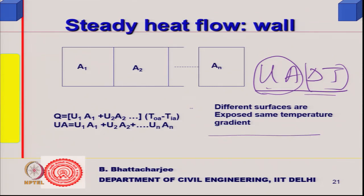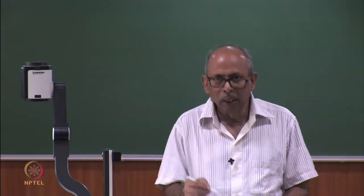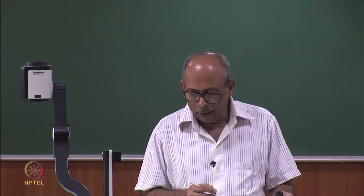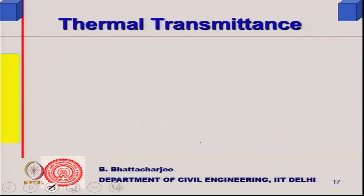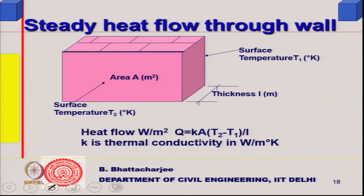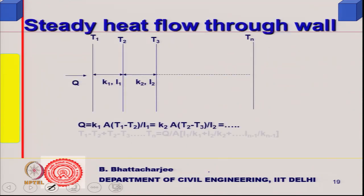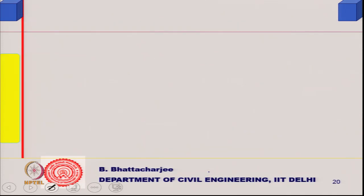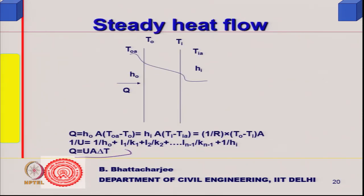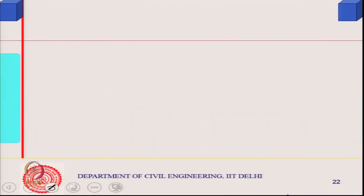Different surfaces exposed to the same temperature gradient can be handled this way. If they are exposed to different temperature gradients, that was the formula 1/U etc. shown earlier. We can recollect the whole derivation: Q = UA·ΔT. Let us progress from here.